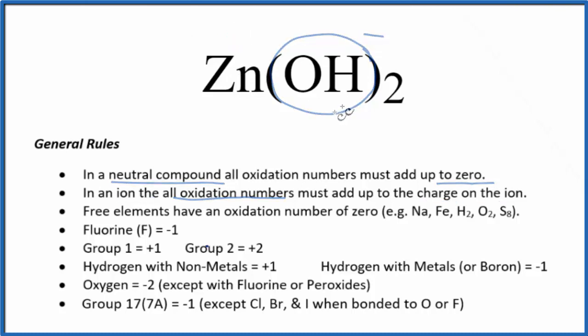We could also do it this way. We know everything adds up to zero. We know that hydrogen, when it's bonded to nonmetals, oxygen's a nonmetal, is plus one. Oxygen is going to be minus two, almost all the time. So we could call zinc X. Let's just set an equation up, because everything equals zero.